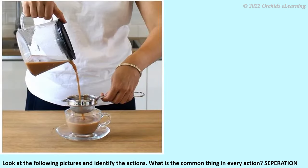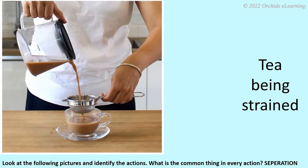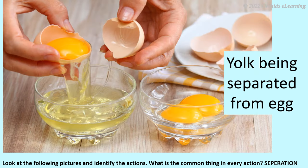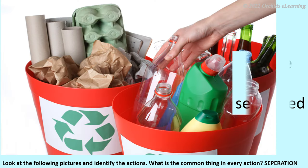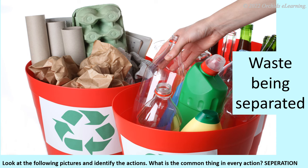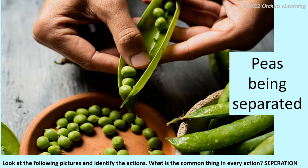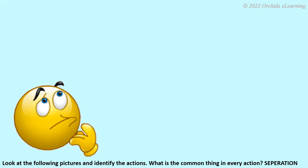Look at the following pictures and identify the actions: tea being strained, yolk being separated from egg, waste being separated, peas being removed from pods. What is the common thing in every action? Separation.